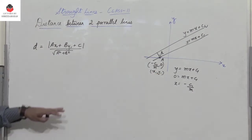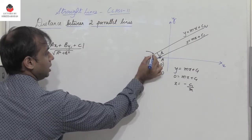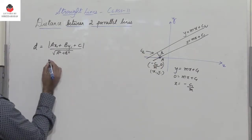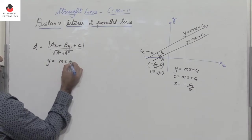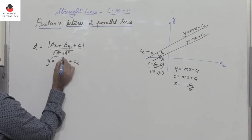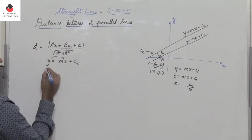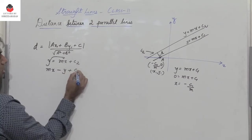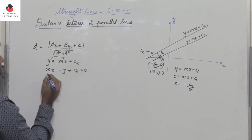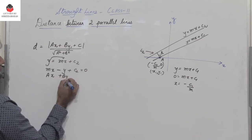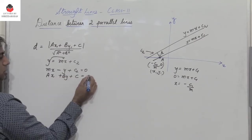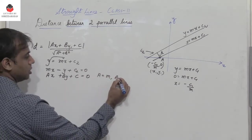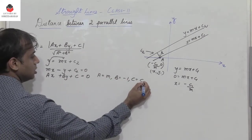So let me substitute the values here where the line happens to be l2. So now consider line l2. We have y equals mx plus c2. Take the term y to the right hand side. So you get mx minus y plus c2 equals 0. Compare this with ax plus by plus c equal to 0. Now what is a? a equals m. What is b? b equals minus 1, and c equals c2.